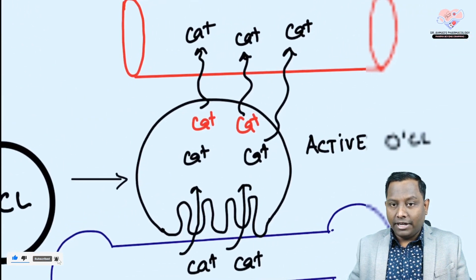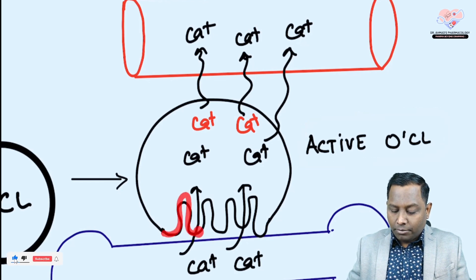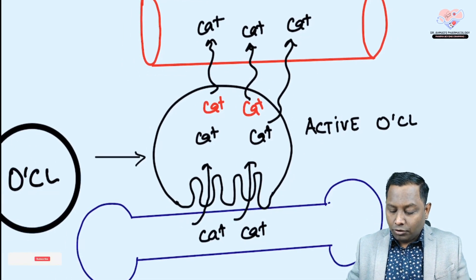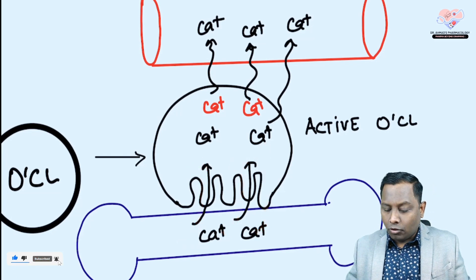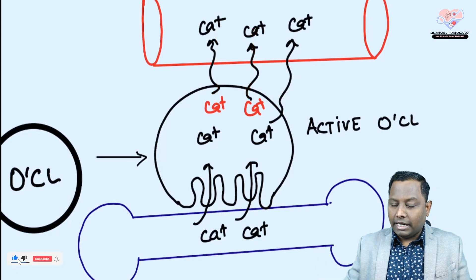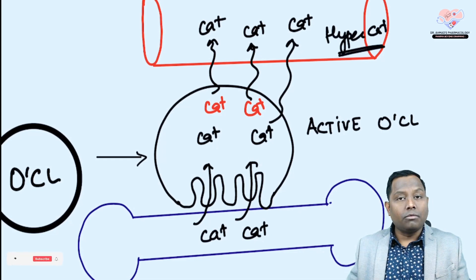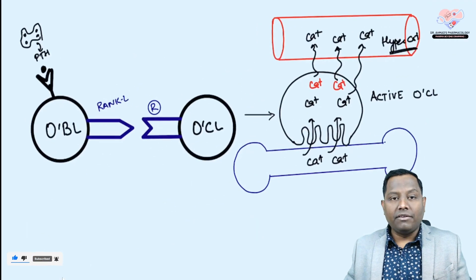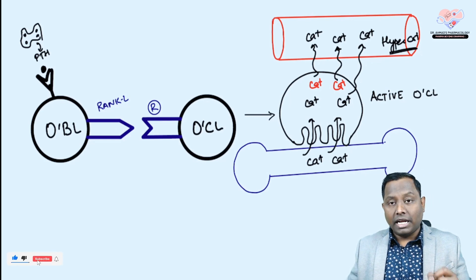The activated osteoclast has a ruffled brush border, which attaches to bone and causes resorption, releasing calcium from bone into circulation. This can lead to hypercalcemia. Always remember — parathyroid hormone always causes hypercalcemia through this mechanism. This is one of the most important mechanisms to understand.